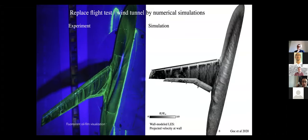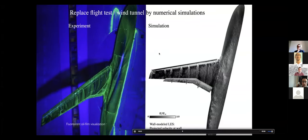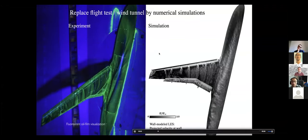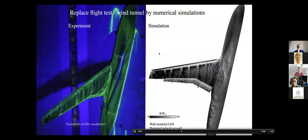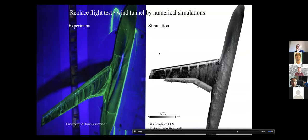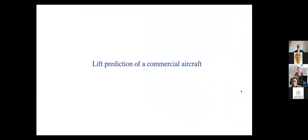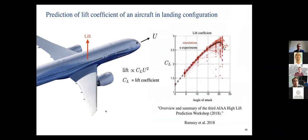On the left is an actual wind tunnel experiment where the model is painted with reflective oil to visualize the flow pattern on the aircraft. On the right is a simulation — a visualization of forces at the wall of the aircraft for exactly the same experiment. The idea is to move to the right: make predictions in one day, and hopefully have those predictions be so reliable that we never need to return to the wind tunnel. For this talk, I'll focus on the lift prediction of a commercial aircraft in landing configuration.